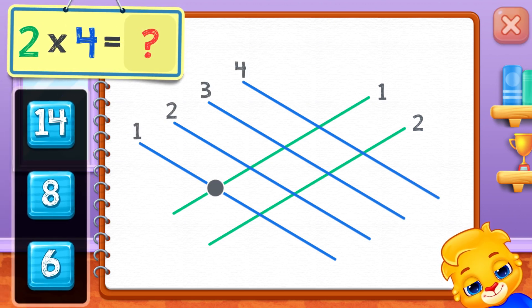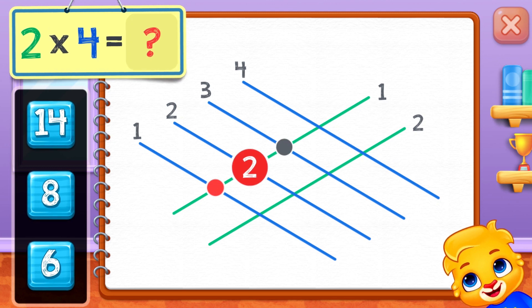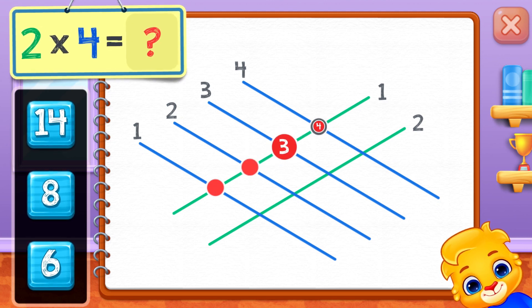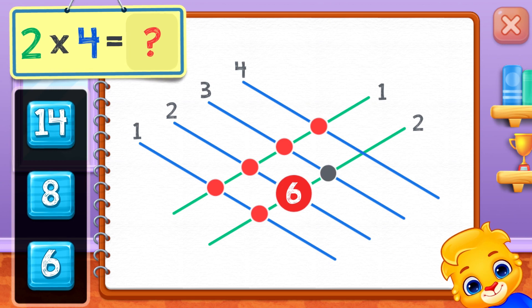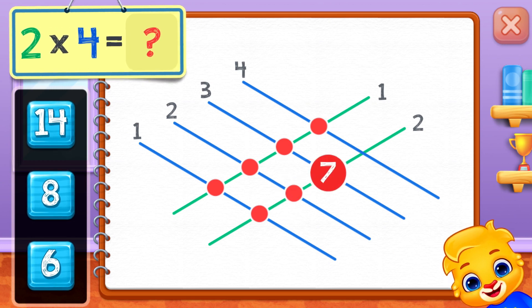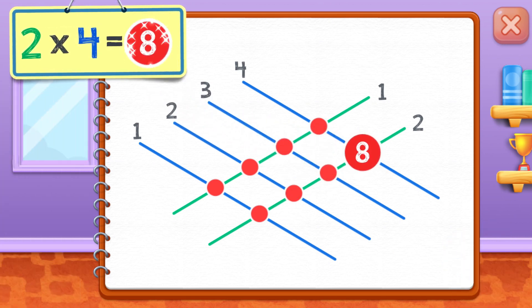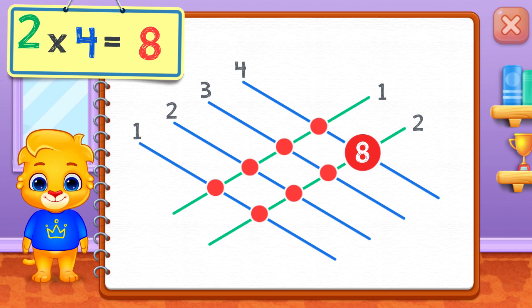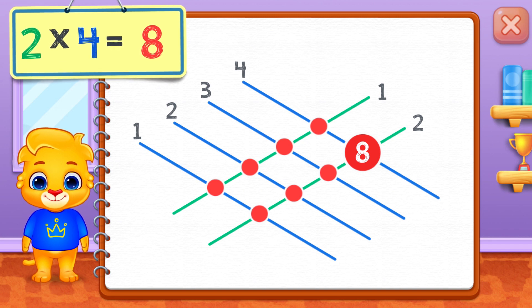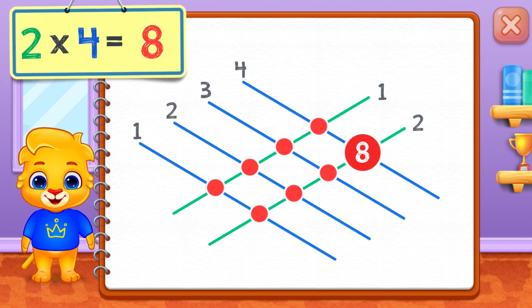One, two, three, four, five, six, seven, eight. Two times four equals eight.